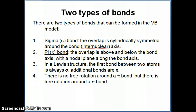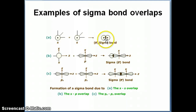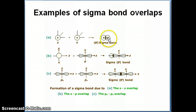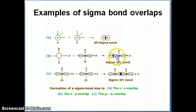Another important point is that you can always rotate freely around a sigma bond. If you hold one s orbital fixed and rotate the other atom around the bond axis, you're not breaking the bond — the rotation is allowed. Same thing with the s–p or pz–pz sigma bond: rotating around the internuclear axis does not break the bond. So the sigma bond allows free rotation along the bond axis.